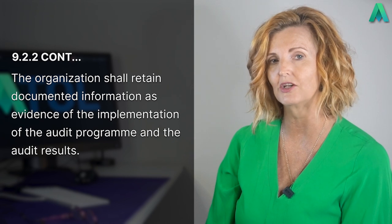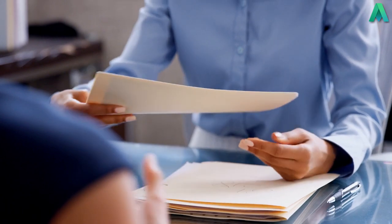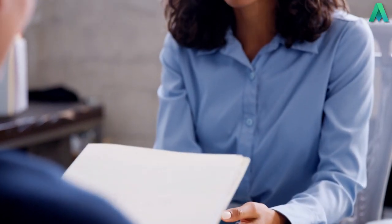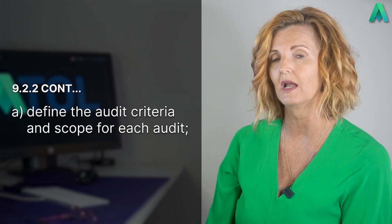Before I move on to point A, I want to skip ahead to the final sentence, where it states that the organisation shall retain documented information as evidence of the implementation of the audit program and the audit results. This clause requirement confirms that we need a documented audit program — it can't just be in your head. So everything I have talked about so far regarding an audit program, it is in documented form, whether it's hard copy, electronic or a software program. Then we also require documented information to be retained as evidence of the audit results, meaning we need to see documented evidence of the outcomes of the audits conducted. This could be as simple as an audit report, which you need to ensure includes, as per point A, a definition of the audit criteria and scope for each audit.